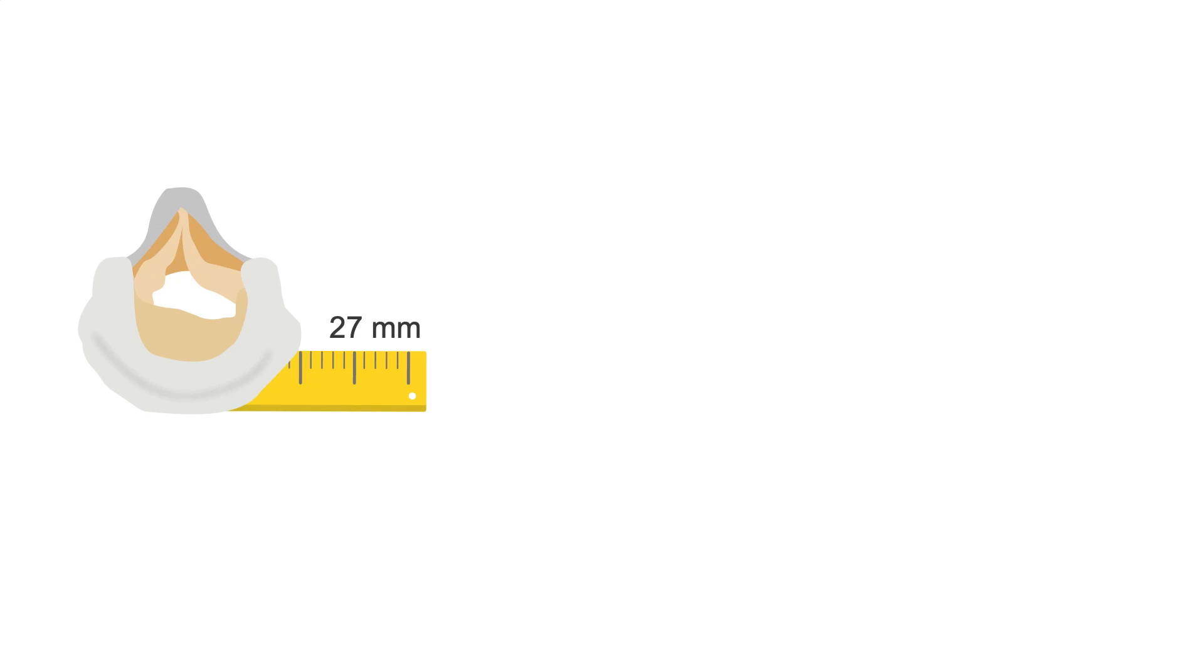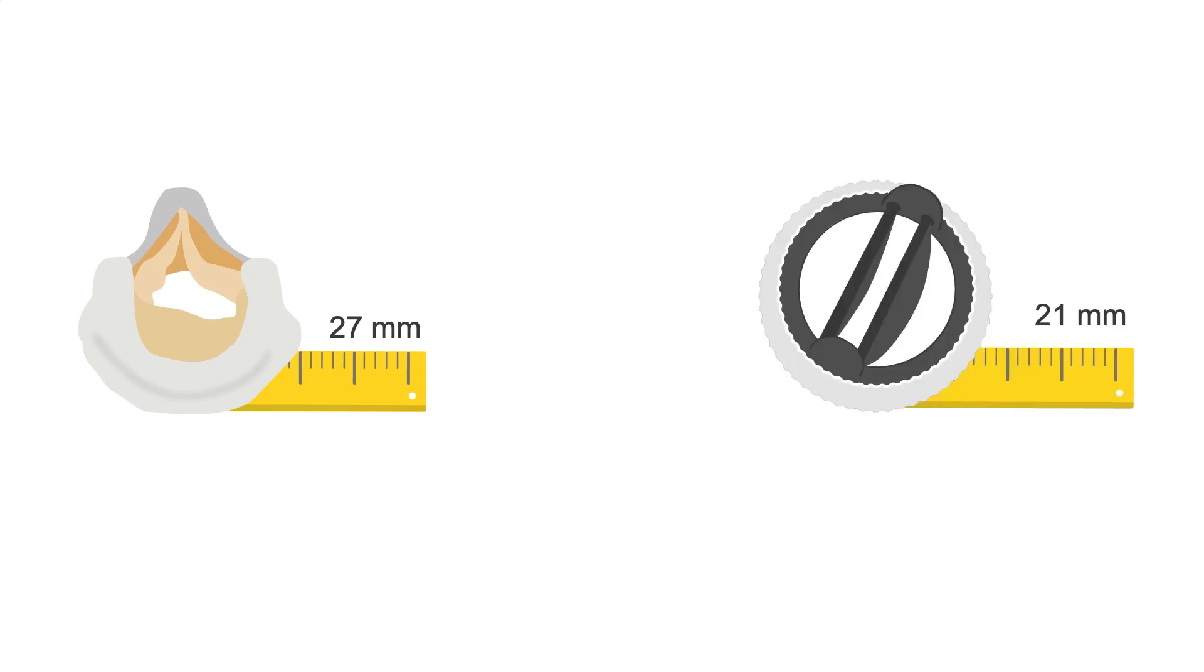Different valve types have different ranges of velocities and gradients. Compared with a 27 mm bioprosthetic valve, a 21 mm mechanical valve in the aortic position will have higher velocities and gradients.